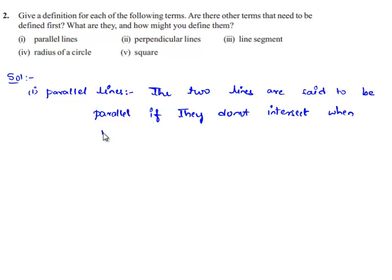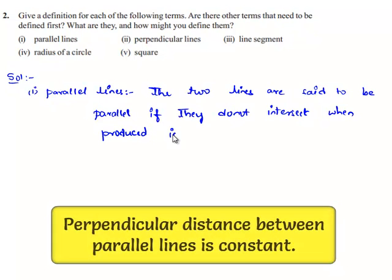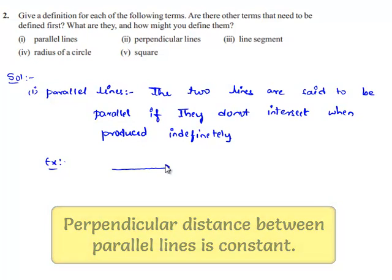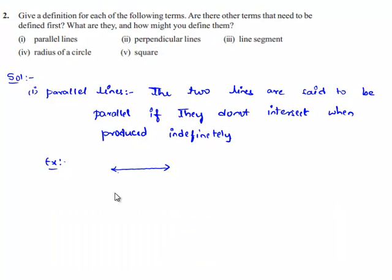For example, let us draw two lines L and M such that if they are extended, they do not intersect at any point. Then these lines are known as parallel lines.